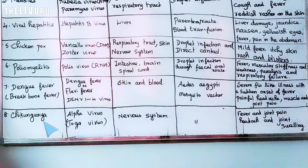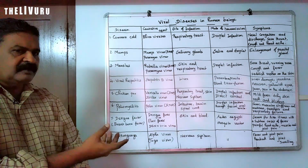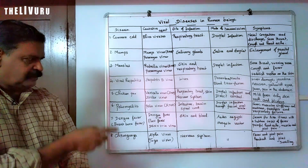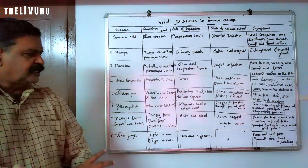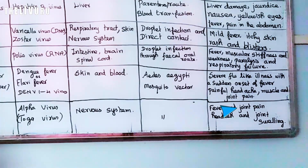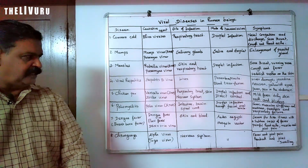The next disease is chikungunya. It is caused by a virus called alpha virus, otherwise called Togavirus. It affects the nervous system — brain and spinal cord. The vector is also the mosquito Aedes aegypti. Symptoms include fever, joint pain, headache, and joint swelling.